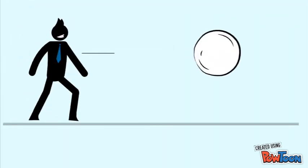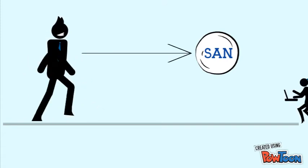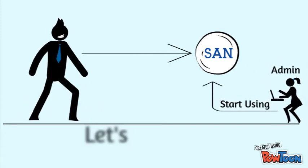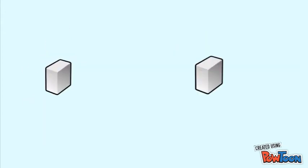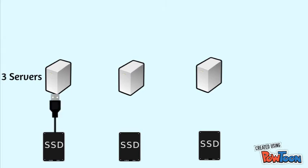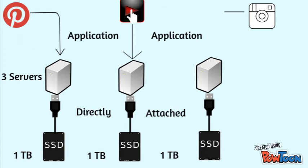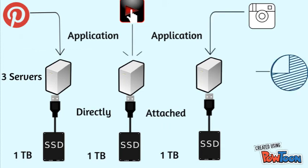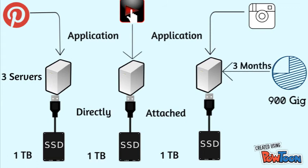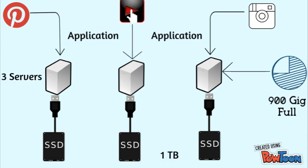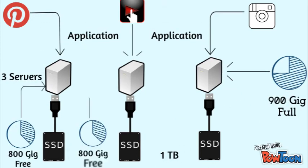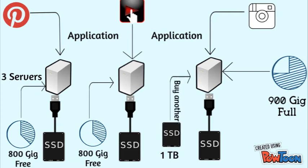So let's move further towards SAN. Consider a scenario where we have 3 servers with dedicated DAS storage of 1TB each, and we have deployed 3 different applications on top of that. Let's say the application deployed on server 3 consumed almost 900 gigs of space in just 3 months, so we need to add another 1TB hard disk. On the other end, I have almost 800 gigs of free space available on the other servers. In short, instead of using that free space, I need to buy another hard disk. In such a scenario, SAN storage came into play.